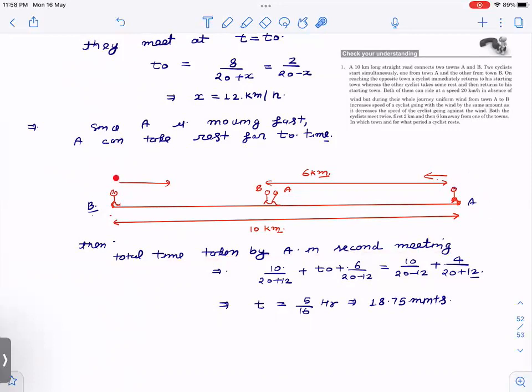Let us see. A started from here. How much time A took? 10 divided by 32, because the speed becomes 32 in this direction. Then T₀ time A has taken rest, so T₀ here. Then after that, A has gone in this direction 6 kilometers, but its speed now becomes 20 minus 12. It is moving against the wind. Now at the same time, B also moves and meets A. So for B, B has started from here and come here first, so that is 10 by 20 minus 12 because it is moving against the wind. Then after that, B has not taken any rest. So B now travels 4 kilometers, but now the speed of B is 32 because B is moving in the direction of wind. So if you solve, you get T₀ as 5 by 16 hours, which is 18.75 minutes.